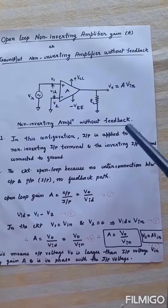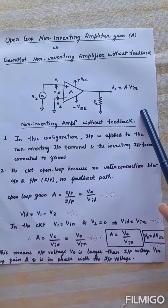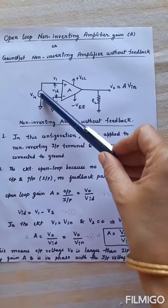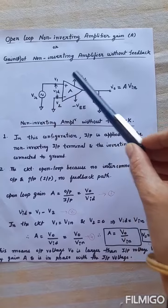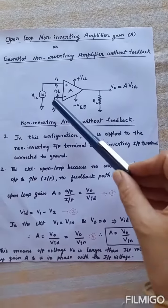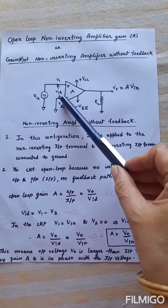The circuit drawn here is known as a non-inverting amplifier without feedback. Why is it non-inverting? Because the input voltage Vin is connected to the plus terminal, or the non-inverting terminal of the op-amp, and the minus or inverting terminal of the op-amp is grounded.